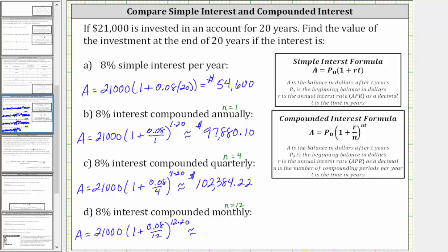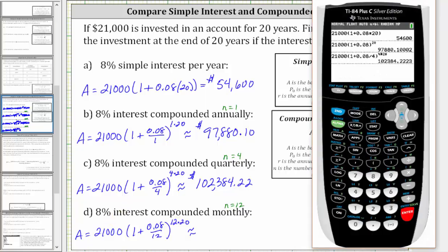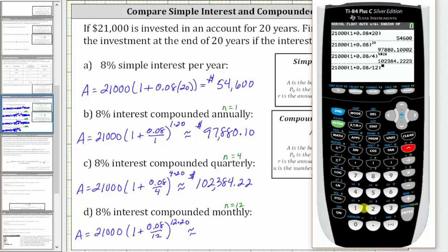Finally, if the interest is compounded monthly, after 20 years, the balance will be $21,000 times the quantity one plus 0.08 divided by 12, raised to the power of 12 times 20, which is 240. After 20 years of interest compounded monthly, the balance is $103,462.86.